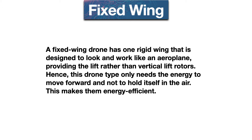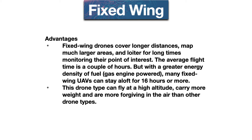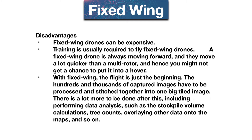A fixed wing drone has one rigid wing designed to look and work like an aeroplane, which provides lift rather than vertical lift rotors. This drone type only needs energy to move forward, not to hold itself in the air, making it energy efficient. Fixed wings cover longer distances, map much larger areas, and loiter for longer times monitoring their point of interest. The average flight time is a couple of hours, but with greater energy density from fuel, many fixed wing UAVs can stay aloft for 16 hours or more. This drone type can fly at high altitude carrying more weight, and is more forgiving in the air than other drone types.